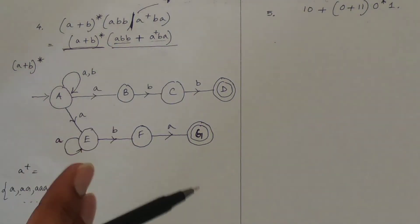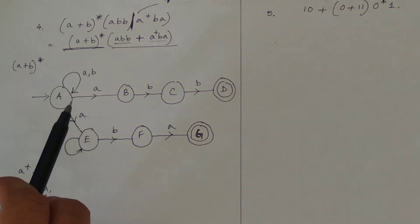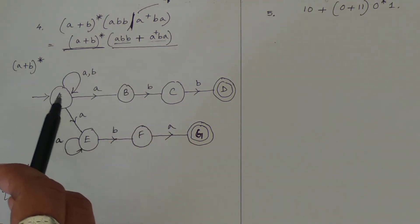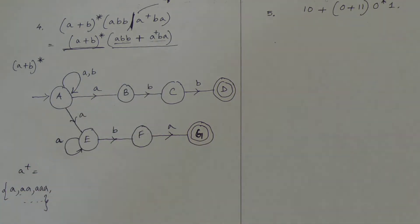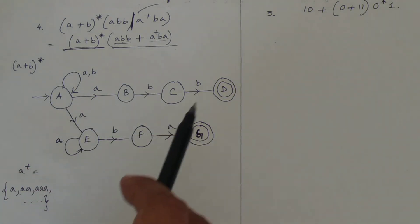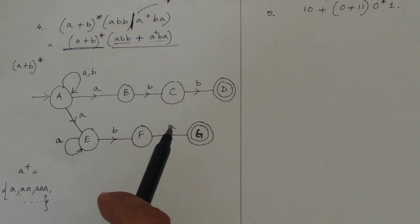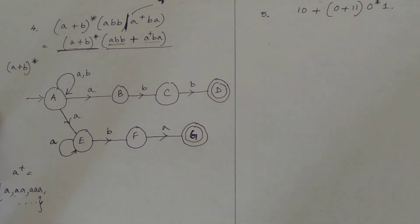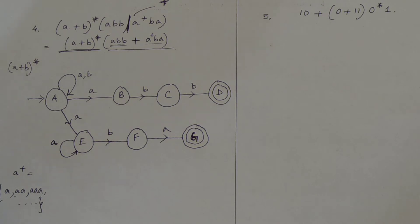So I have made separate paths: for (a+b)* I used the self-loop path; for 'abb' I used the path through states A–D; and for a⁺ba I used the path through states E and F. Either from F you can connect directly to final state D via transition 'a', or use a separate final state. This is the complete NFA for the given expression.